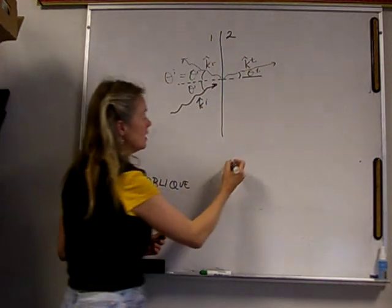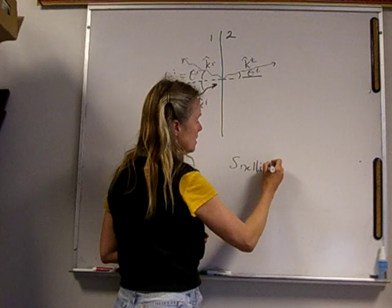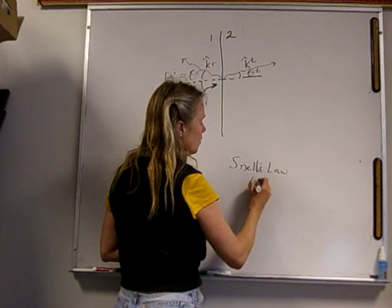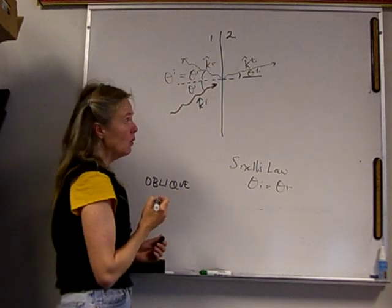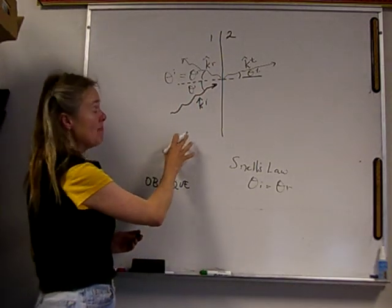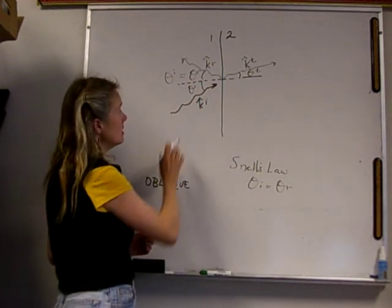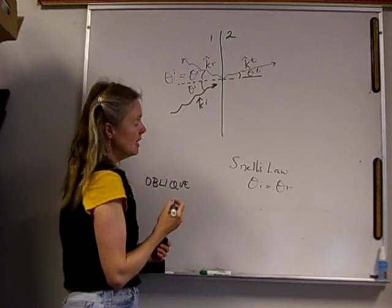We use Snell's law to be able to find all of the angles. The first thing that we indicated was that theta i and theta r are equal. The second thing is depending on these two materials and theta i, we'll be able to find theta t.